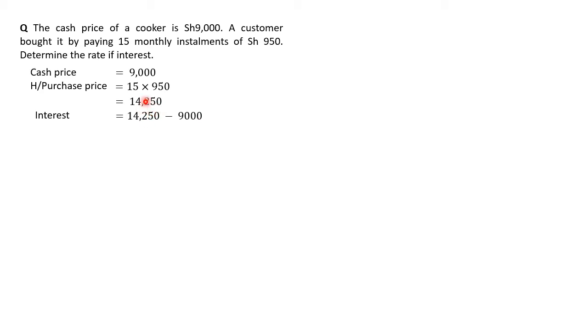Now, the interest in our case is 14,250 minus 9,000, which gives us this figure here. And again, we're not going to use the 5,250 anywhere in our calculation. We need to understand that the rate of interest normally will be written using the formula of compound interest, where we normally say A equals P times in brackets 1 plus R over 100 raised to power N.